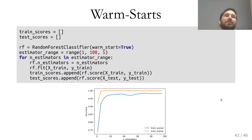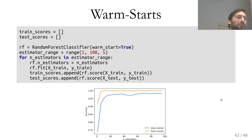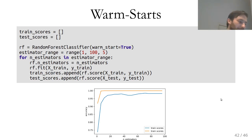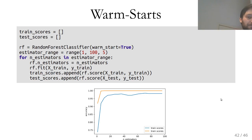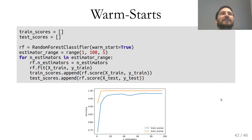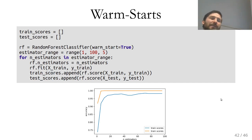When figuring out how many trees to use, there's no point in grid searching the number of trees because more trees always means better or equal performance — if you grid search over 10, 100, 1000, the most trees will always win. The interesting question is: how many trees do I need to get good enough performance? You could do a search once to find, say, 100 trees is enough, so you don't waste time training a thousand.